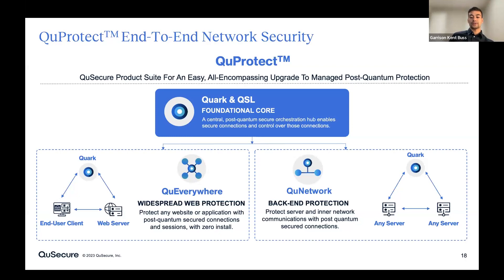Q Network is a similar protection, but for server-to-server applications. You can think of these as complementary — Q Everywhere being outside of perimeter or outside of firewall in old parlance, and Q Network is within perimeter. All of this is facilitated by Quark and our Quantum Secure layer, which is basically our IP that allows you to gain visibility into both of those services, provide keys, manage them, and set associated policies.